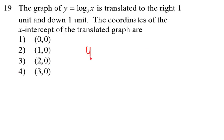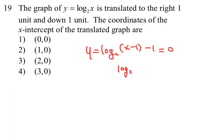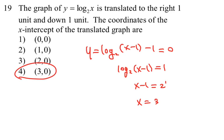Number nineteen: we're translating the function right one unit and down one unit, so the new function becomes log base 2 of (x minus 1) minus 1. Setting that equal to 0 to find the x-intercept, we get log base 2 of (x minus 1) equals 1. Converting to exponential form, x minus 1 equals 2 to the first power, so x equals 3, which is choice 4.